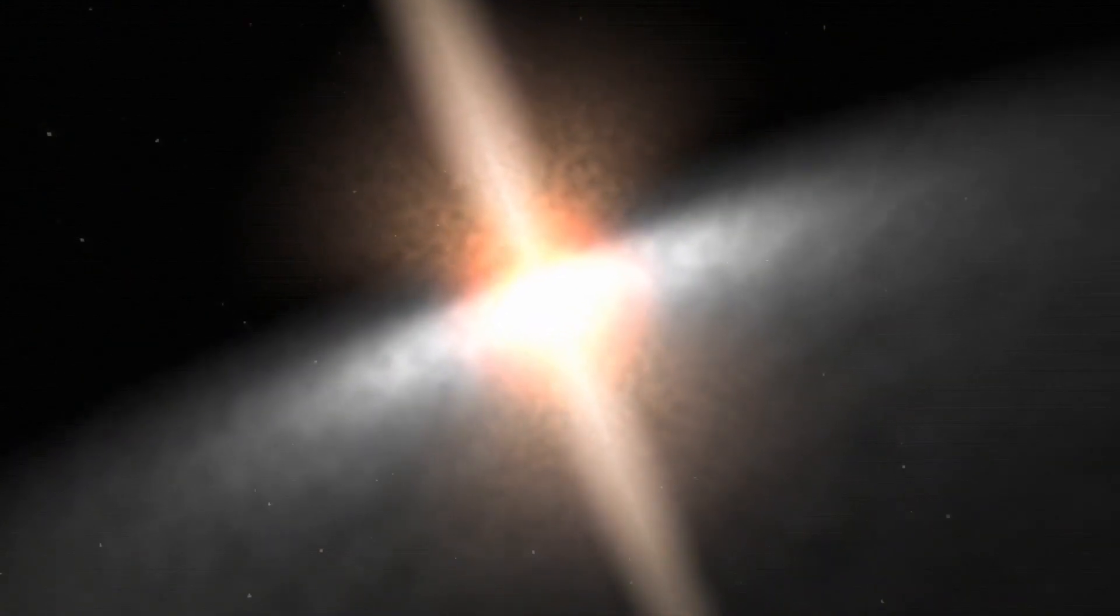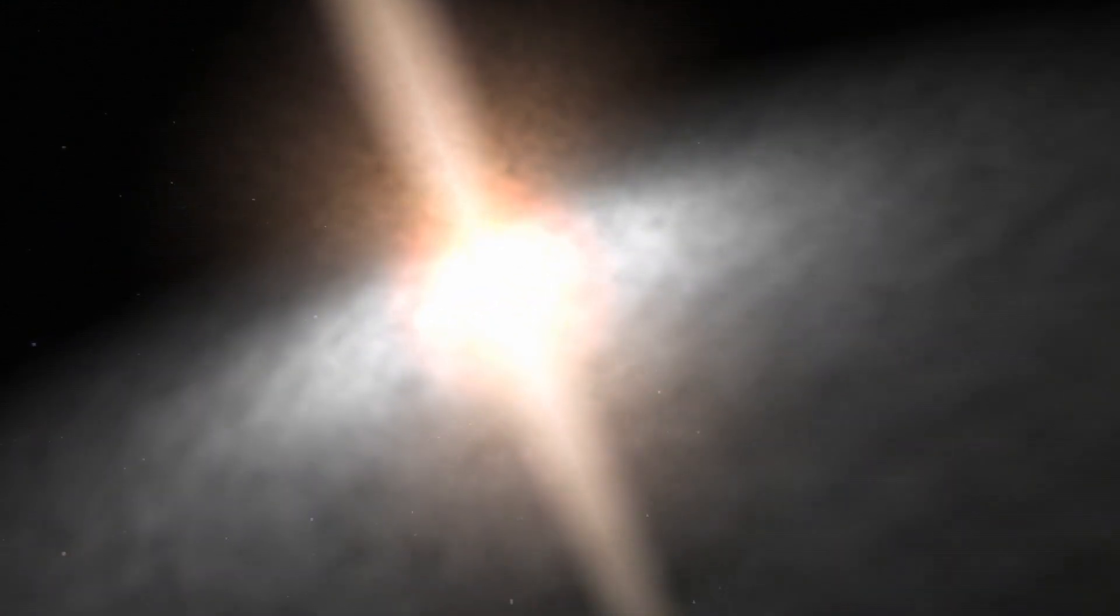About 10 million years ago, a cluster of supernovae created the local bubble, a 300-light-year-long, peanut-shaped bubble of gas in the interstellar medium that surrounds our solar system.